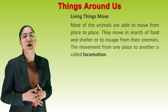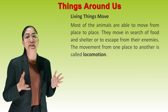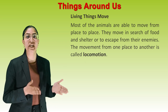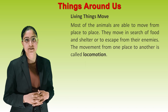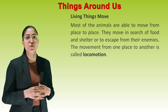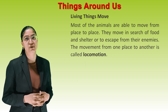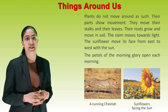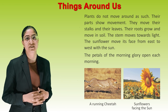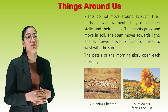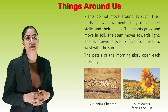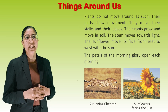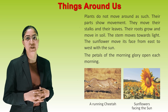Next, living things move. Most animals are able to move from place to place. They move in search of food and shelter, or to escape from their enemies. The movement from one place to another is called locomotion. Plants do not move around as such, but their parts show movement. They move their stalks and leaves, their roots grow and move in soil, and the stems move towards light. The sunflower moves its face from east to west with the sun. The petals of the morning glory open each morning.